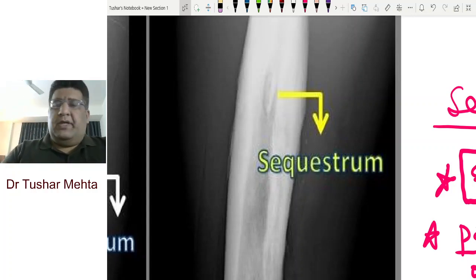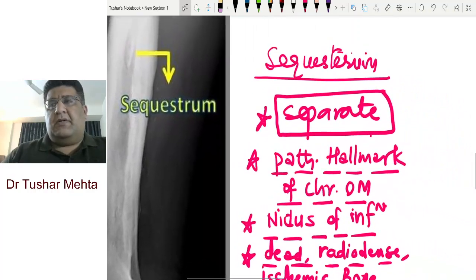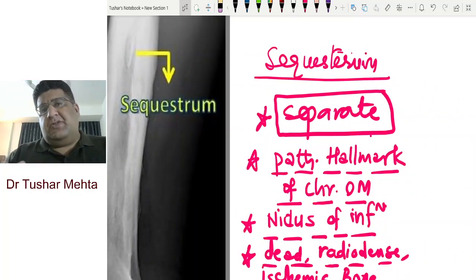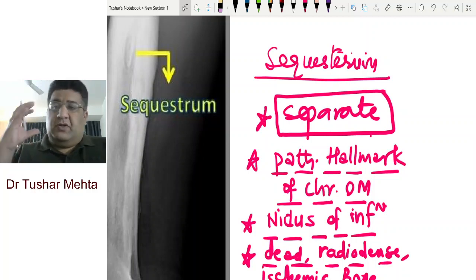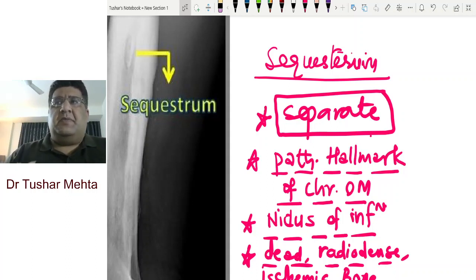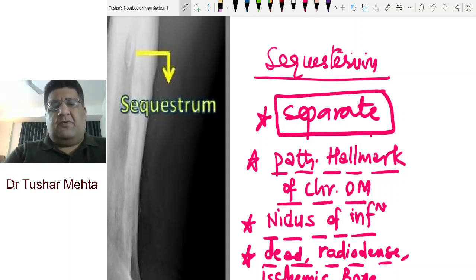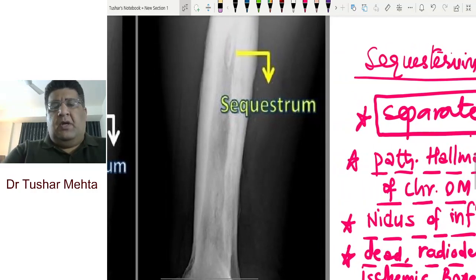It is the pathognomonic feature of chronic osteomyelitis. The third very important point is that it is the chief nidus of infection. Nidus means nest, source, locus — the focus where things are concentrated. So it is the chief nidus of infection, meaning that until the sequestrum is there, infection will persist. Infection persists with sequestrum — that's something to remember.